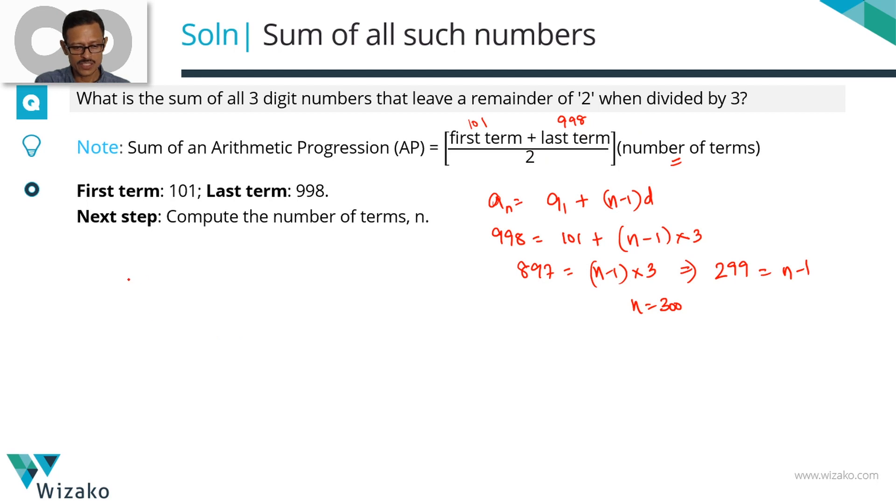Let's plug in that value. Sum of the sequence where the first term equals 101 and last term is 998 is 101 plus 998 divided by 2 times the number of terms which equals 300. 2 gets cancelled with 300 to leave us with 150. 101 plus 998 is 1099 times 150.